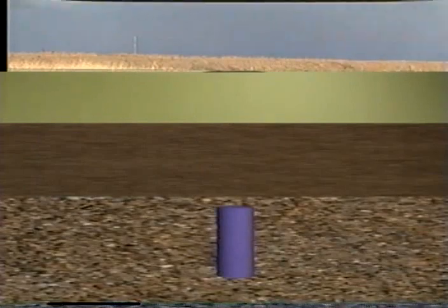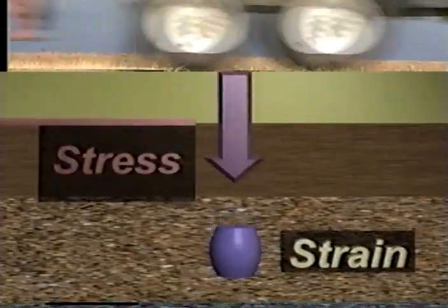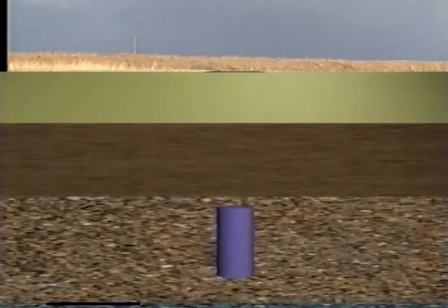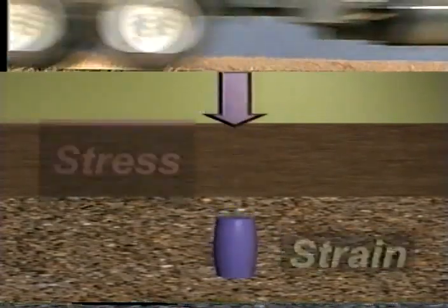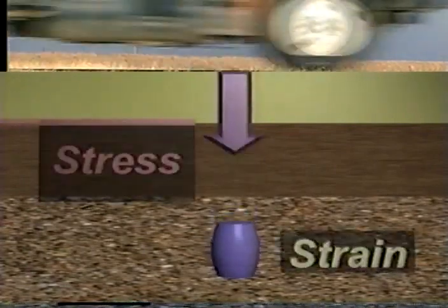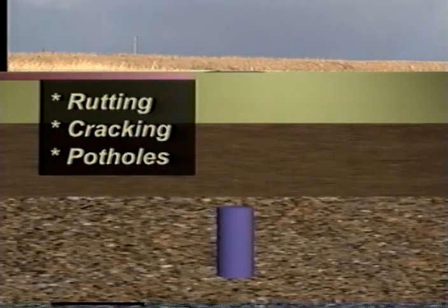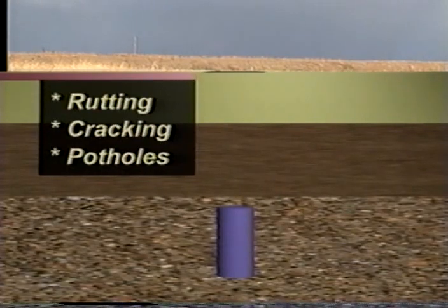Each time the stress is removed, the material tends to return to its original shape. Tends to return — that's important. We want the pavement material to spring back to its original shape, because if it doesn't, we've got trouble in the form of rutting, cracking, potholes, or other expensive problems.